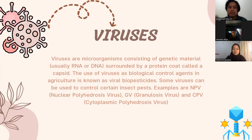Some viruses can be used to control populations of insect pests. Examples are NPV or Nuclear Polyhedrosis Virus, GV or Granulosis Virus, and CPV or Cytoplasmic Polyhedrosis Virus.